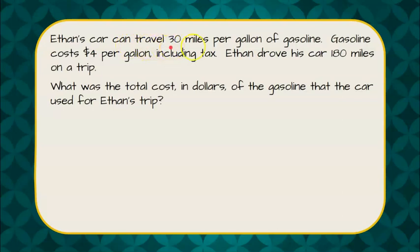Ethan's car can travel 30 miles per gallon of gasoline. Gasoline costs $4 per gallon, including tax. Ethan drove his car 180 miles on a trip.